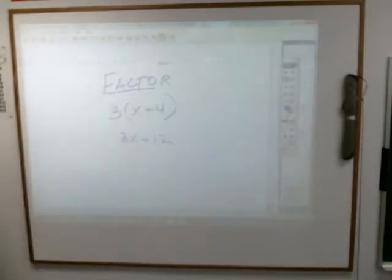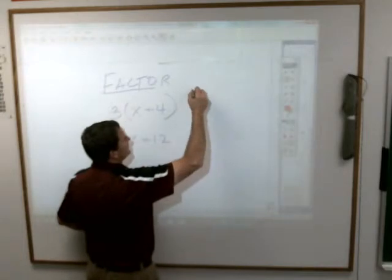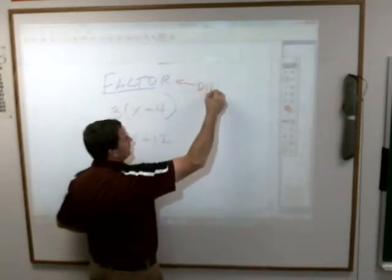When the directions tell you to factor, you are actually going to take the ending thing and work it back to the beginning thing. In other words, factoring the way the book talks about it is really doing the distributive property in reverse.